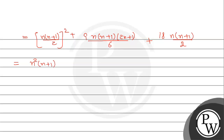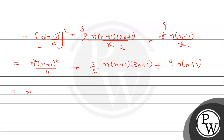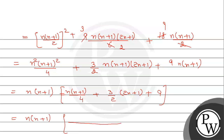Simplifying: the first term gives n²(n+1)²/4. Cancelling factors in the second term (9/6 = 3/2), we get (3/2)·n(n+1)(2n+1). The third term simplifies to 9·n(n+1). Taking n(n+1) as common, the remaining terms are n(n+1)/4 + (3/2)(2n+1) + 9. Taking LCM = 4.